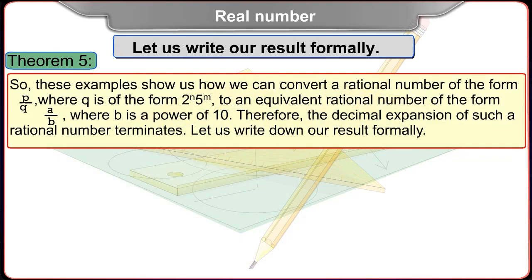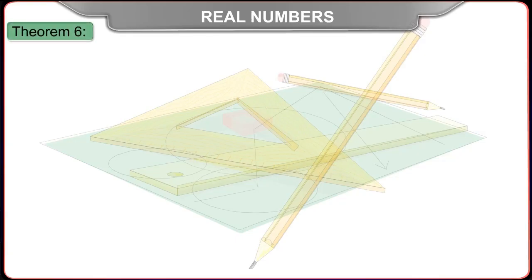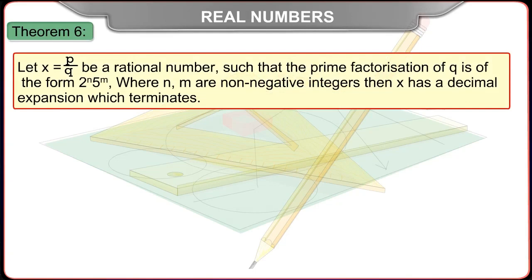So these examples show us how we can convert a rational number of the form P upon Q, where Q is of the form 2 raised to n into 5 raised to m, to an equivalent rational number of the form A upon B, where B is a power of 10. Therefore, the decimal expansion of such a rational number terminates. Let us write down our result formally. Theorem 6: Let x equal to P upon Q be a rational number such that the prime factorization of Q is of the form 2 raised to n into 5 raised to m, where n, m are non-negative integers. Then x has a decimal expansion which terminates.